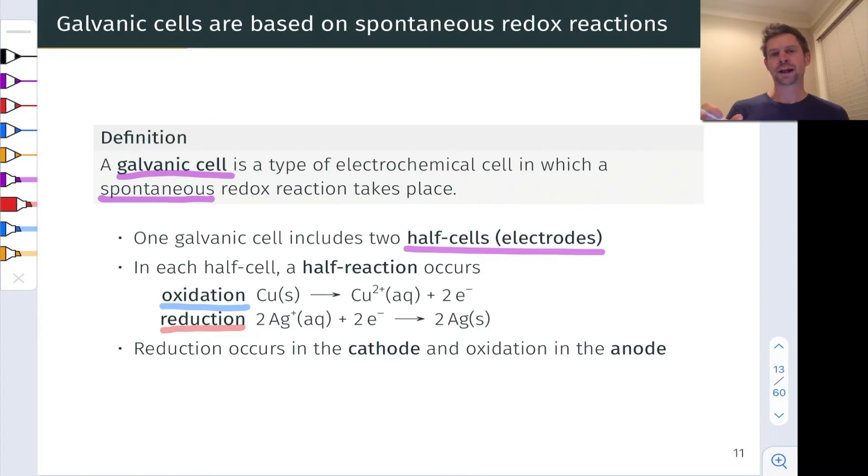The way we set up a galvanic cell, these half reactions are physically separated in space. This means that the electrons that are lost from the copper metal in the oxidation event have to travel through a wire before they can arrive at the silver plus cations to effect reduction. This current we can use to light up an LED or charge a phone or do any of the other variety of things we might want to do with current and voltage.